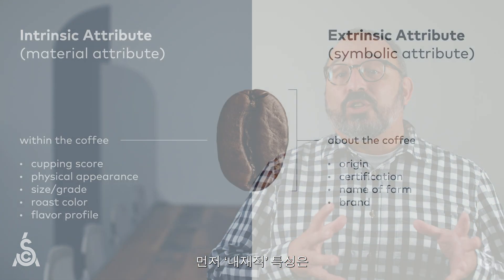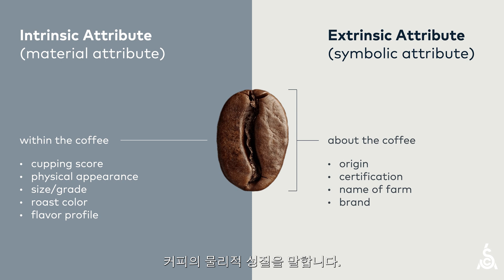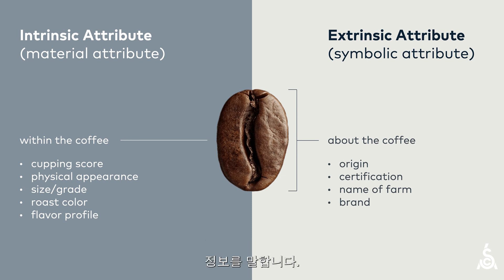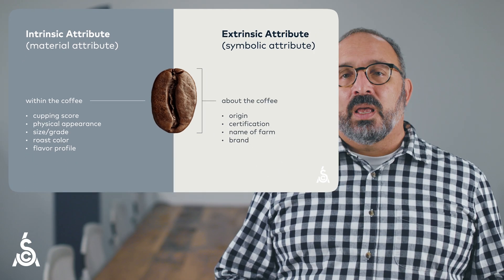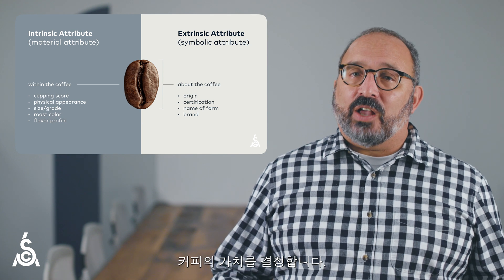Since these attributes differ, we can take another step in organizing them. Some attributes are intrinsic to the coffee and are a part of their material reality. This would include the flavor of the coffee due to its chemical makeup, its physical properties, grade, etc. But also important are the extrinsic attributes, which are usually information about the coffee — things like its country of origin, brand, or sustainability certification. Both categories of attribute are important, and both add value to the coffee.